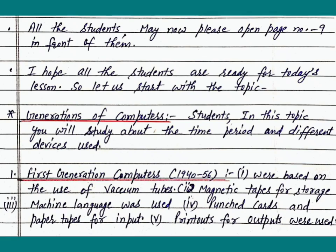Generations of Computers. Students, in this topic you will study about the time period and different devices used. Number 1: First generation computers from 1940 to 1956 were based on the use of vacuum tubes, magnetic tapes for storage, machine language was used, punched cards and paper tapes for input, and printouts for output.